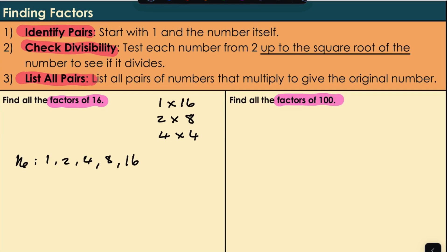What about our next question? Factors of 100. So we start with 1 multiplied by 100. Then 2 multiplied by 50. Does 3 go into 100? No. 4? Yes.